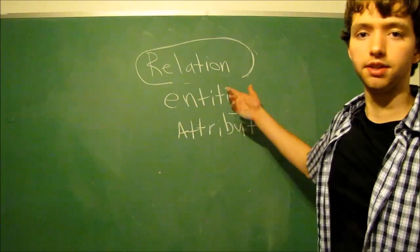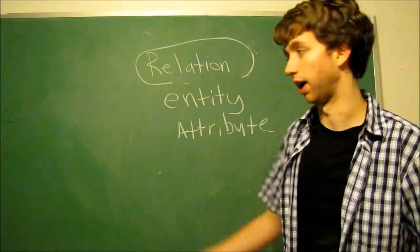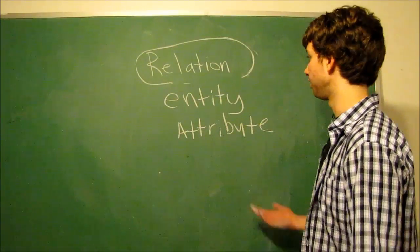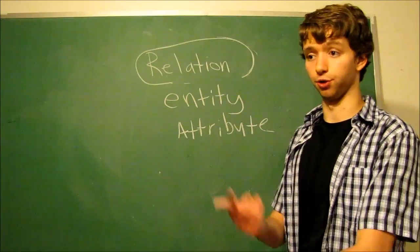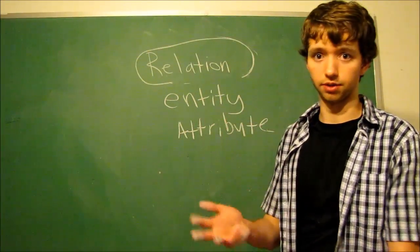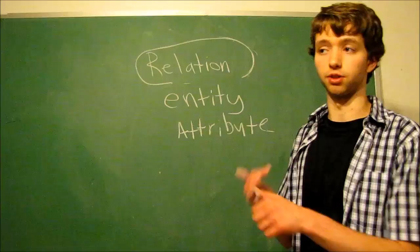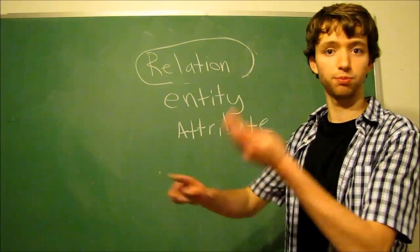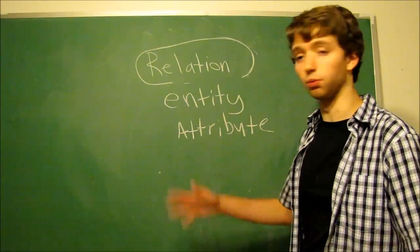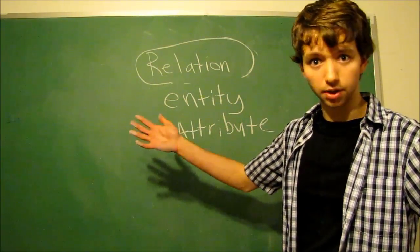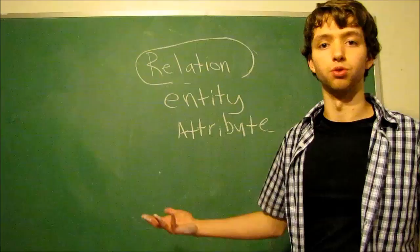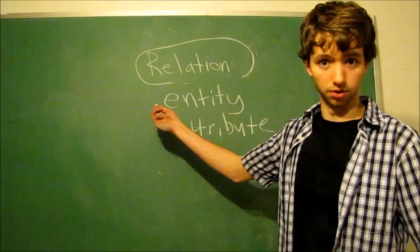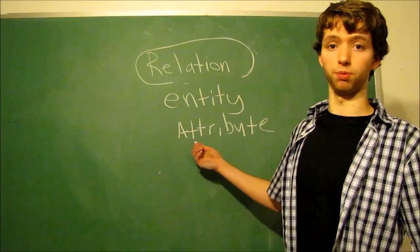So an entity is anything we store data about. Attributes are the things that we store. So if an entity is a person, an attribute would be their name, their username, their password, their hair color, their address, their phone number, their relationship status, the person they're in a relationship with, the orders that they've made, or whatever. It just depends on what you need to store for that specific application. So entity is what we store the data about. Attribute is what we store.